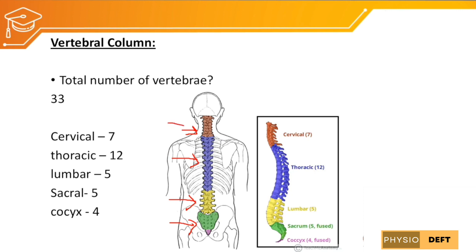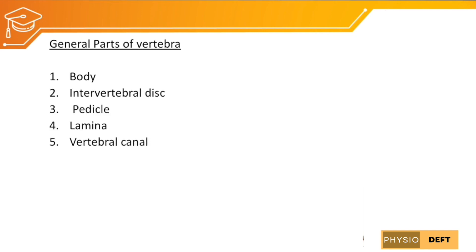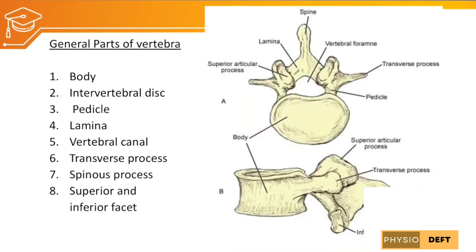The general parts of a vertebra are: the body, intervertebral disc, pedicle, lamina, vertebral canal, transverse process, spinous process, and superior and inferior articulating facets.